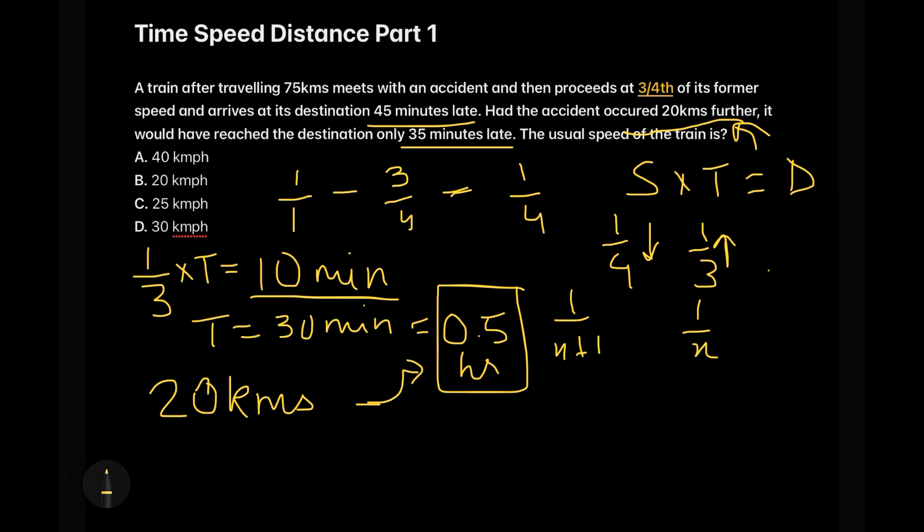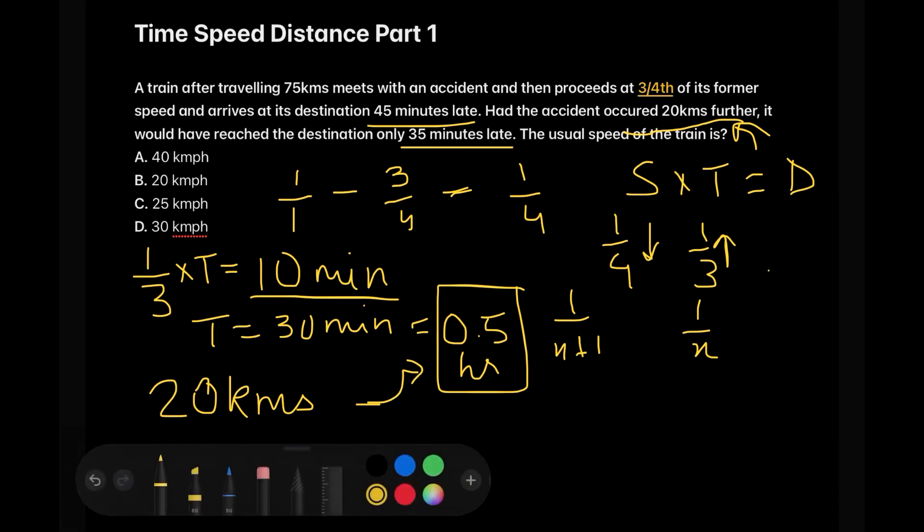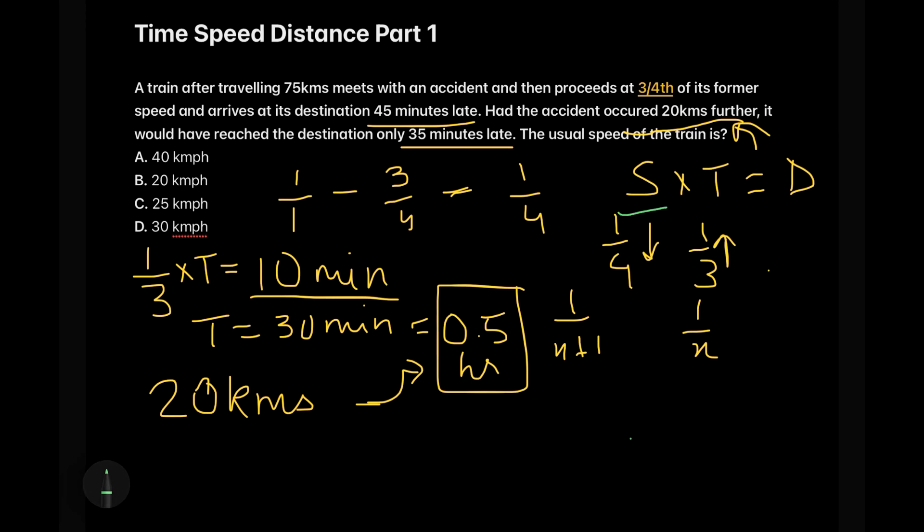So now in the formula, in our basic formula of speed time and distance, we have with us the distance and the time both. So we know the formula is distance divided by time. So I would be dividing 20 kilometers by 0.5 which will account to 40 kilometers per hour. That is option A.